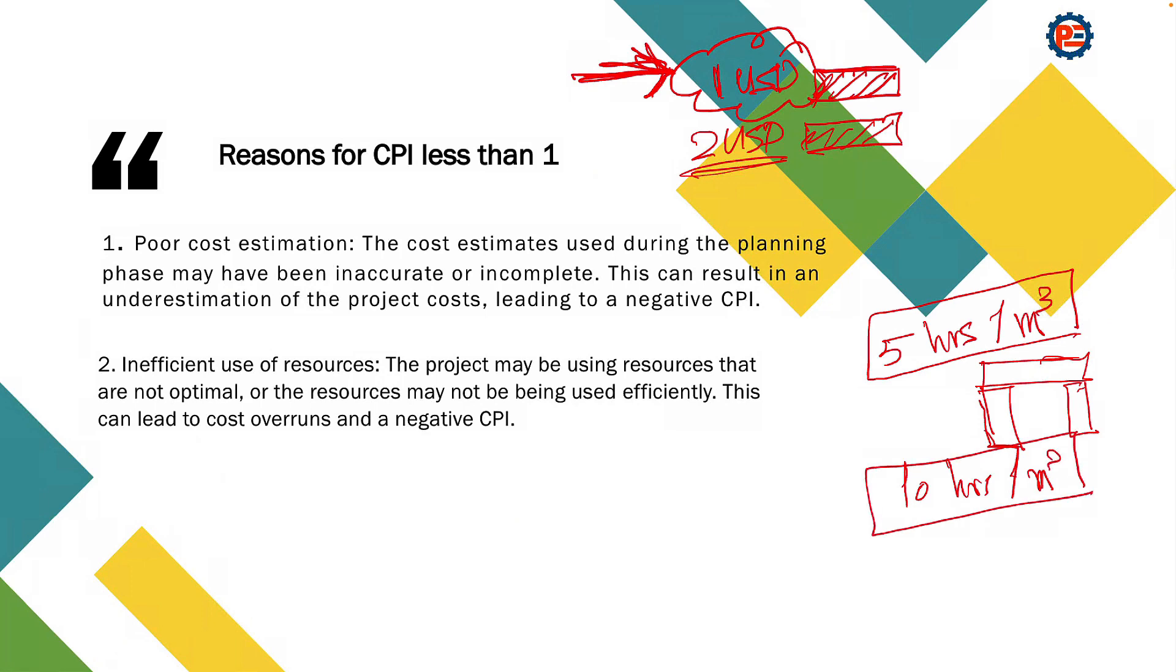What does it mean? It means that your resources efficiency is not correct, assuming that this five hours per cubic meter is correct. If it is not correct, we'll go back to the first point that the estimation is not accurate. Assuming that our estimation is accurate, then your manpower productivity is not as well as it should be.